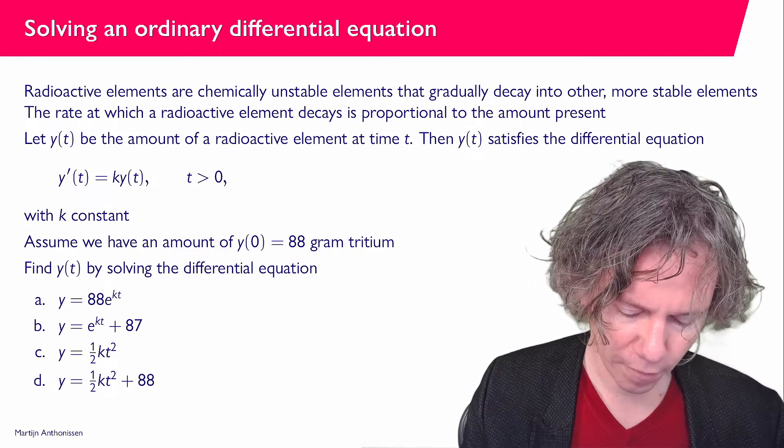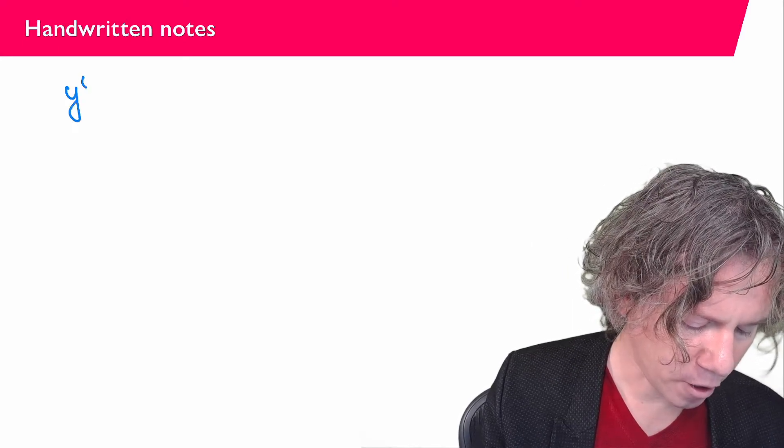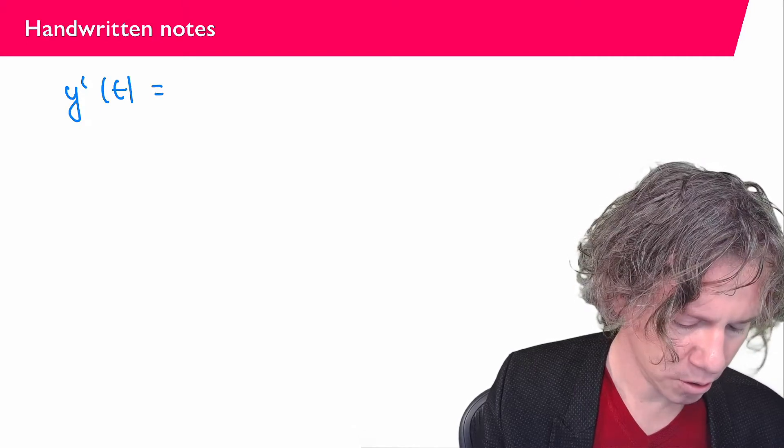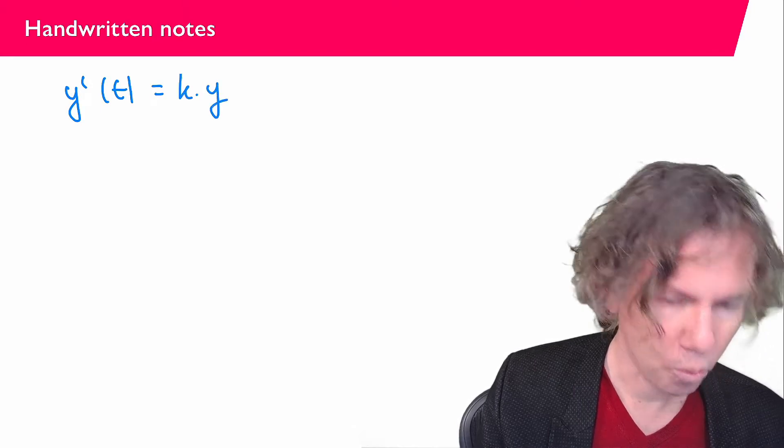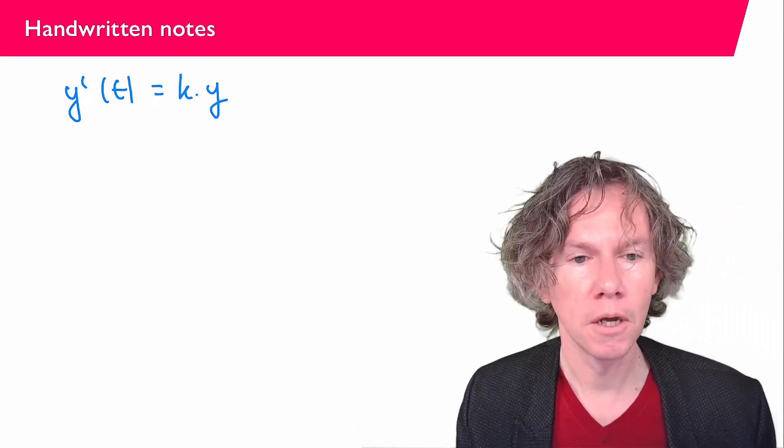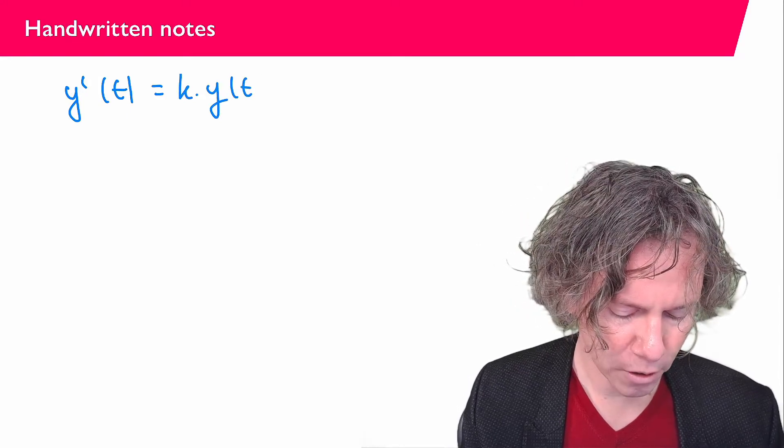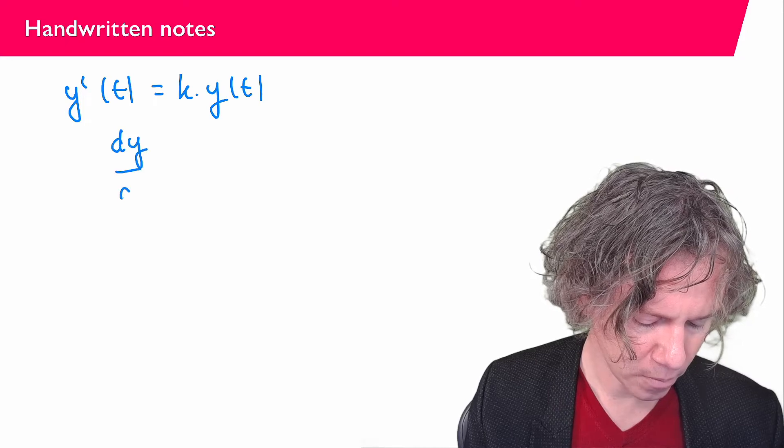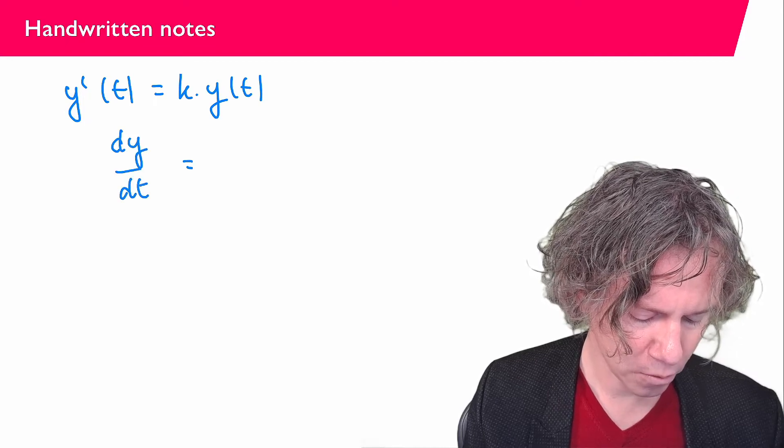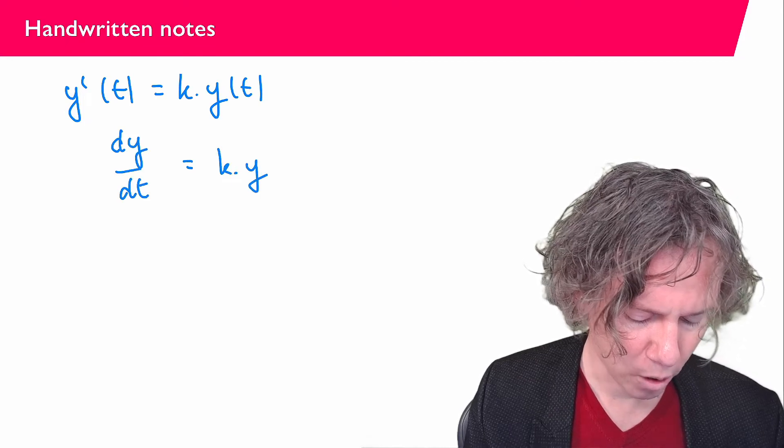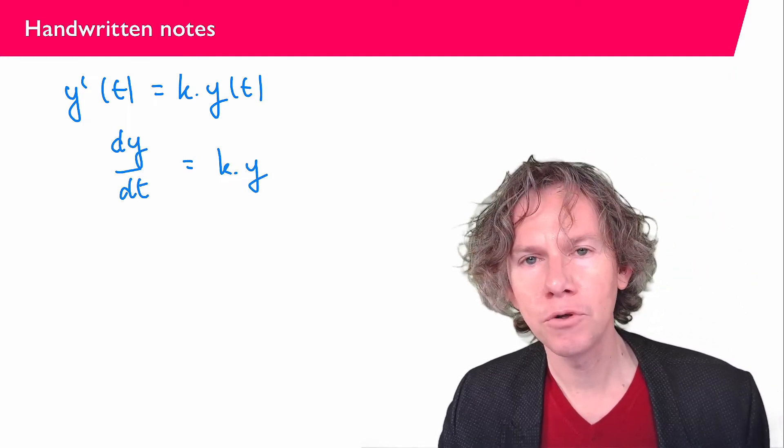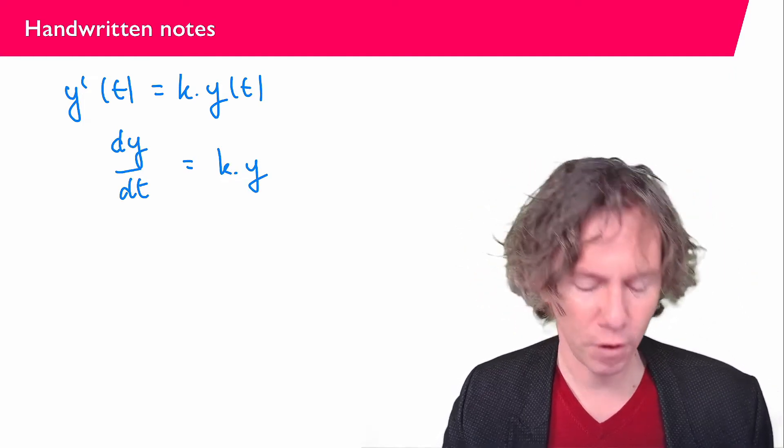The differential equation we have is y'(t) = k·y, and k is a constant. I'm going to write that a little bit differently: dy/dt = k·y. As you can see, I can now use the separation of variables technique.